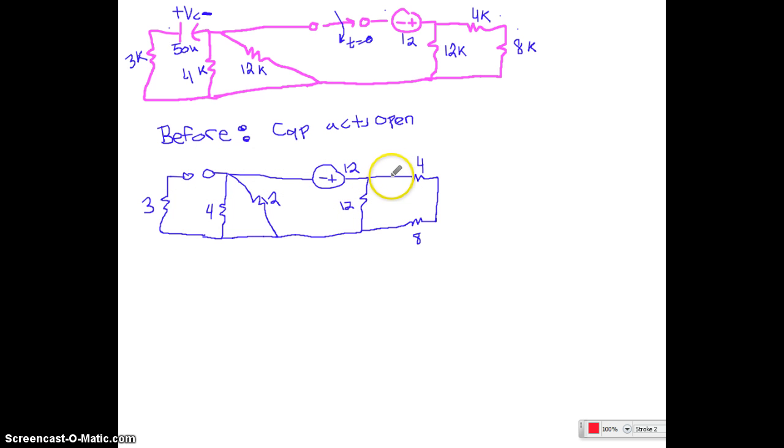So what I can do now is I can go ahead and I can combine some of these resistors. The four and the eight are in series, but they're in parallel with the twelve. So we have four plus eight, that's twelve, in parallel with another twelve, that's going to give us six. Now on this side, since this is an open circuit here, this three basically is like void, it doesn't count anymore.